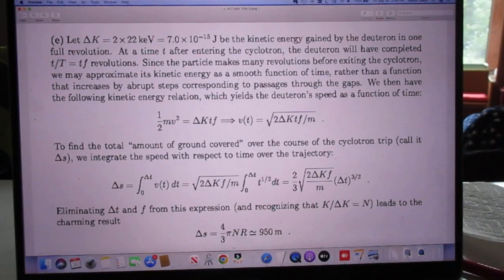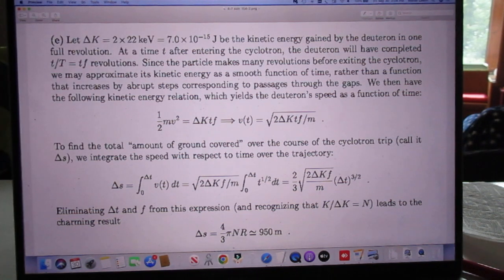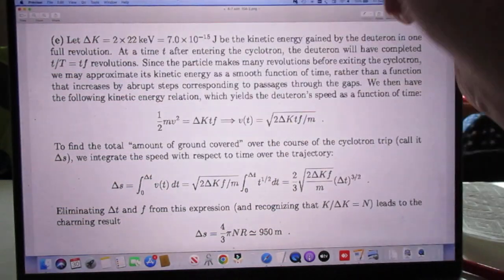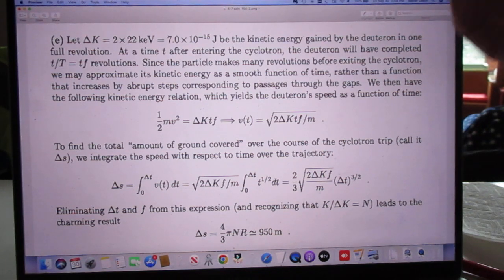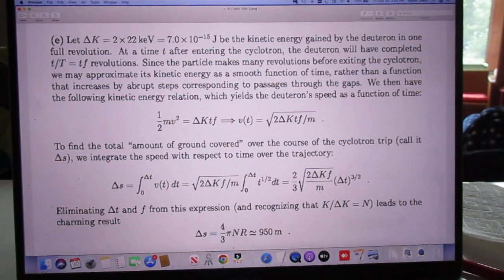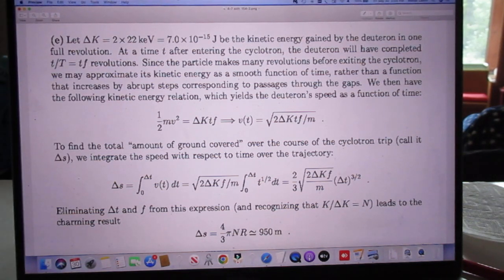So let's now look at the last question. Let the increase in kinetic energy during each full rotation be 44 kilo electron volts, which is so many joules. At the time T after the deuteron has entered the cyclotron, the deuteron will have completed T over capital T is T times F revolutions and F is then the frequency which we already calculated.